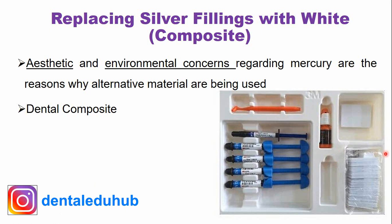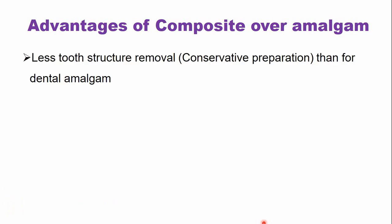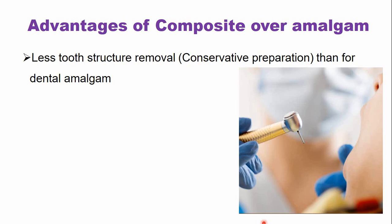This is a basic dental composite kit. What are the advantages of white fillings or composite fillings over dental amalgam? The first advantage is less tooth structure removal as compared to the amalgam filling. There is conservative preparation in case of composite, while in amalgam filling, large cavity preparations are usually done.